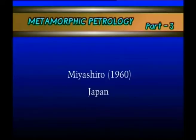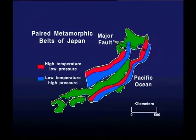During 1960, Miyashiro was mapping in Japan and found a slightly different type of metamorphism — particularly low-grade metamorphism as well as high-grade metamorphism in the Japan area. He particularly observed the mineral sequence and assemblages in that area.